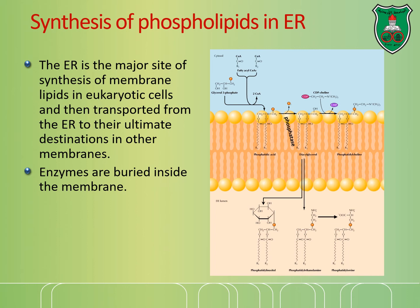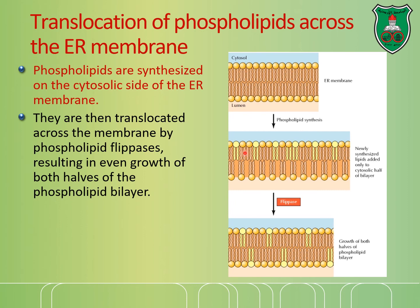Another function of the endoplasmic reticulum is the synthesis of phospholipids, which takes place on the surface of the ER because the enzymes responsible for synthesizing phospholipids are located inside the plasma membrane. Synthesis of phospholipids specifically takes place on the cytosolic side of the ER, resulting in more phospholipids on the cytosolic leaflet. Enzymes known as flippases then flip these phospholipids, equalizing the proportion of phospholipids on both sides of the membrane.